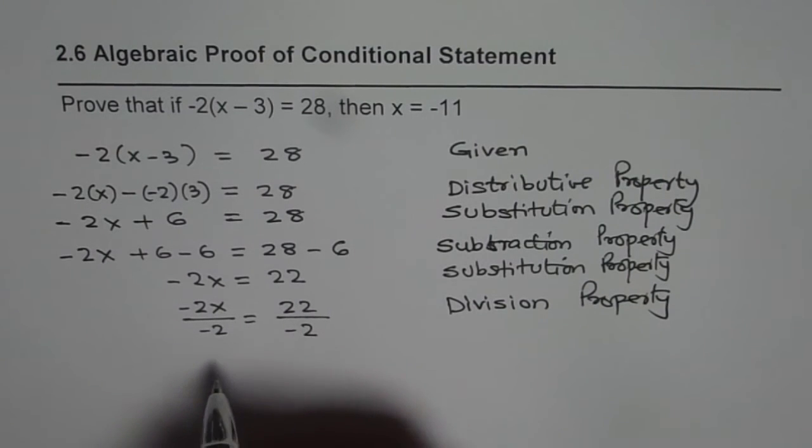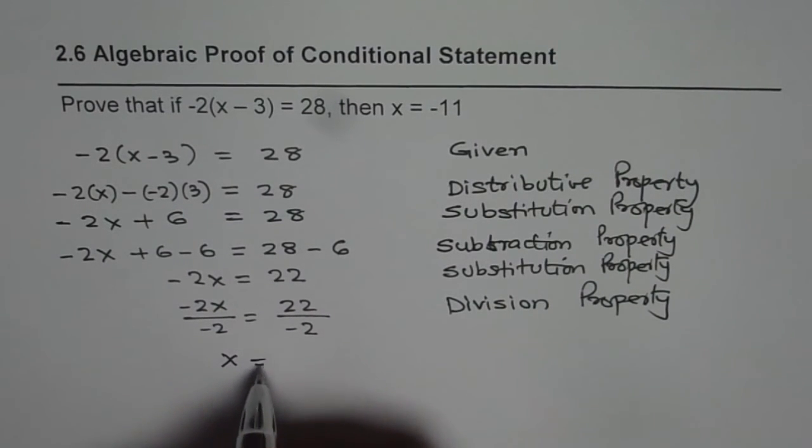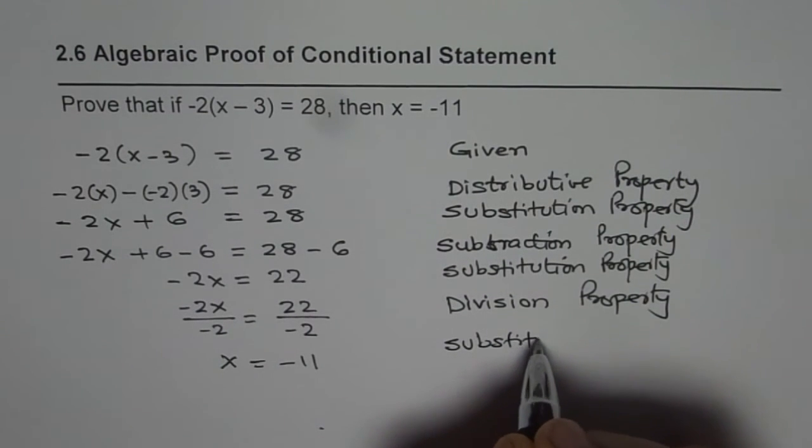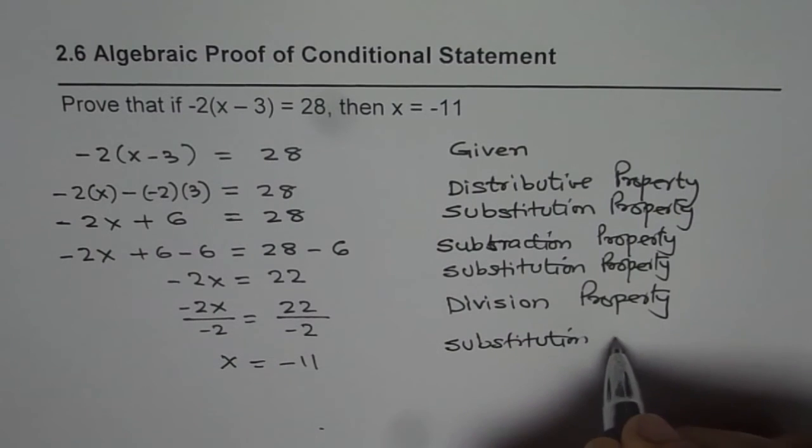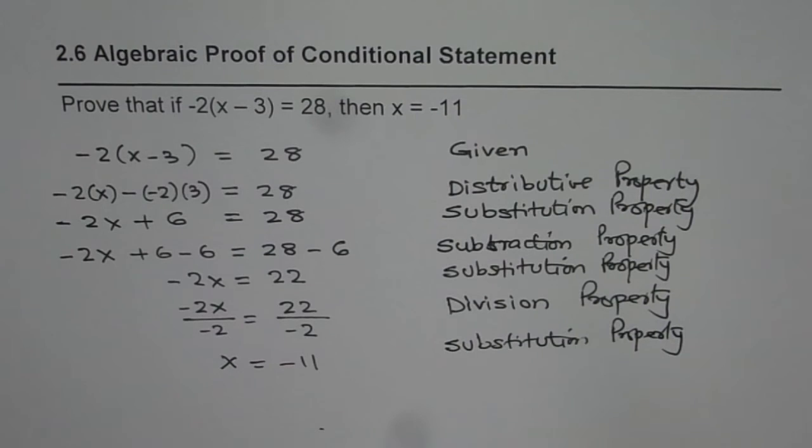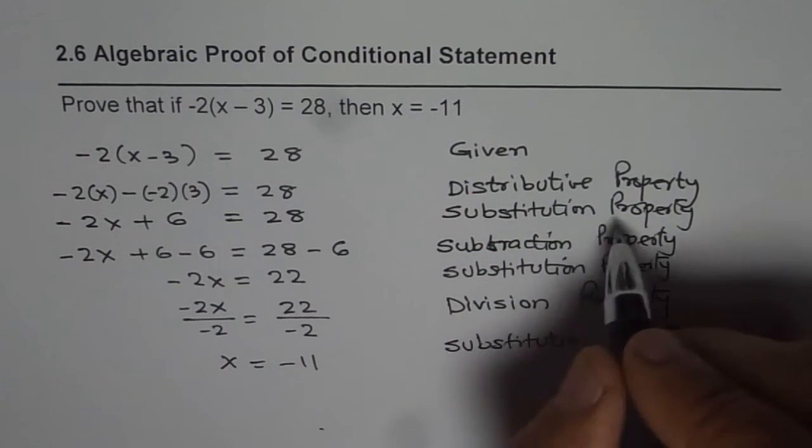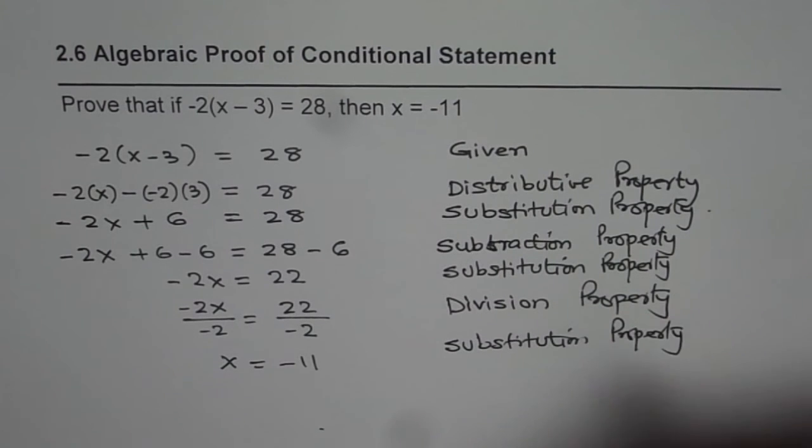That results in x = -11, substitution property. All these are properties of equality. You could write distributive property, then substitution property of equality.